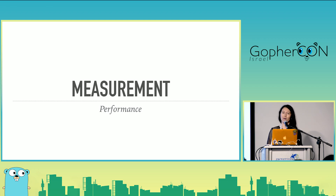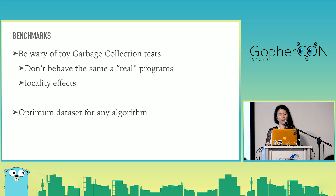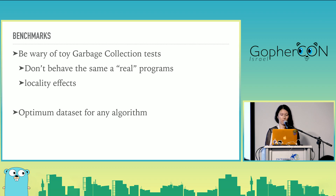Now we get to measurement — how do I know if the garbage collector is a problem? As an aside, if you've seen blog posts like the Haskell GC versus the Go GC, take them with a grain of salt, because they're often purposely generating a lot of garbage just to exercise the garbage collector and may not reflect your real program. There have also been academic studies showing that there's an optimum data set for any algorithm — Go and Haskell use different GC types. That said, benchmarks can be super useful for stress testing and finding your code's hot paths.